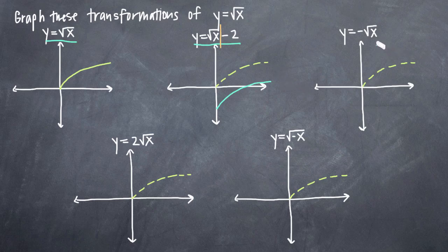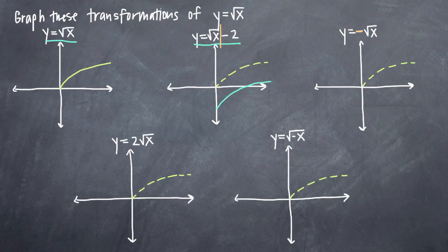In this third example where we have y equals negative square root of x, we have a negative 1 multiplied by our square root of x term. Whenever you have a constant multiplied by your original function, that means you're either going to be stretching or shrinking your graph, and/or flipping the graph across an axis. Every point you plug in for x is going to return a certain y value, but now that we've multiplied by this negative out in front, we're going to get the same y value but multiplied by negative 1. So this is just a transformation flipped across the x-axis. Just remember that if you've got your original function square root of x with a negative out in front, that means you're going to be flipping it over the x-axis.